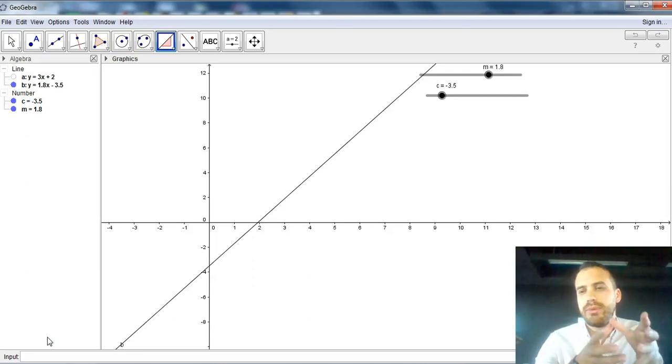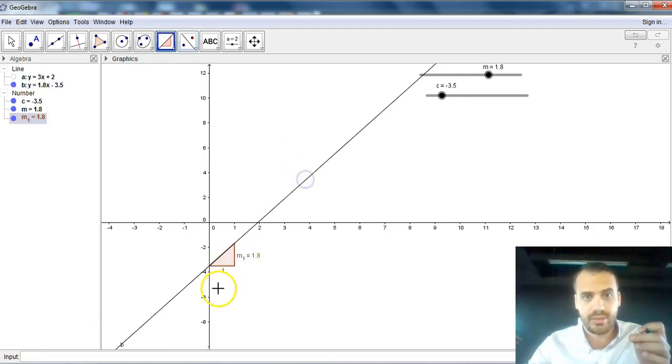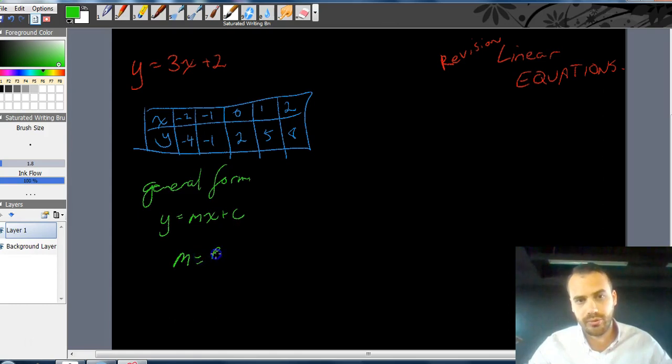Now, you should also remember that to find the gradient, you can use a couple of things. You can use rise over run, or you can use y2 minus y1 over x2 minus x1, which is the same thing. The gradient looks something like this. m equals rise over run, or m equals y2 minus y1 over x2 minus x1.